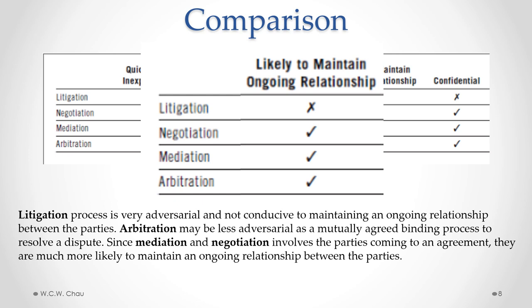In many situations involving a dispute — especially a dispute between two businesses — it may be highly advantageous to maintain an ongoing business relationship between the two parties despite the dispute. Now, with the litigation process, it tends to be very adversarial, and because of that, it's not conducive to maintaining an ongoing relationship. With arbitration, it does tend to be less adversarial because it involves a mutually agreed upon binding process, but it can still be adversarial. With mediation and negotiation, since the parties are coming to an agreement, they are much more likely to maintain an ongoing relationship.